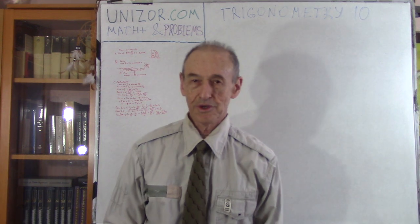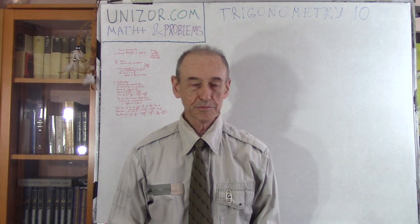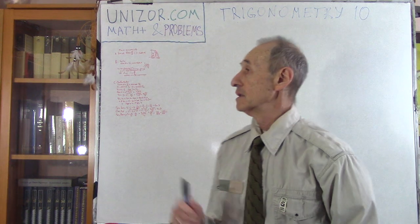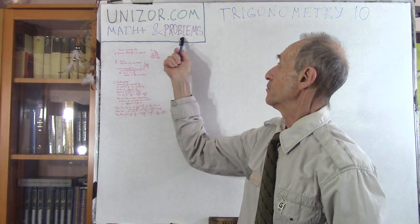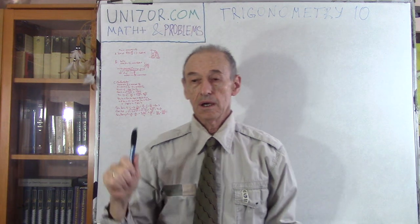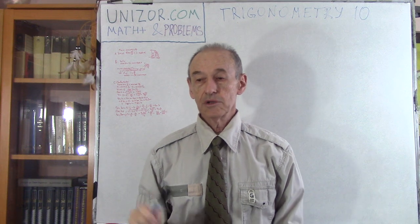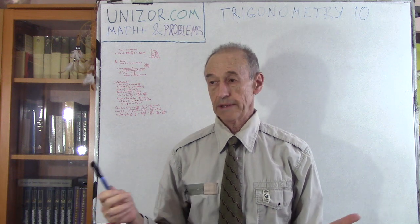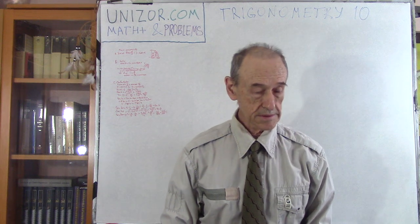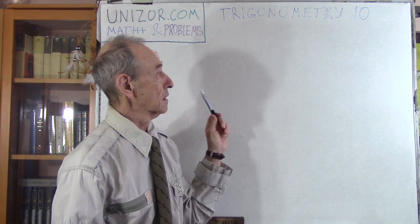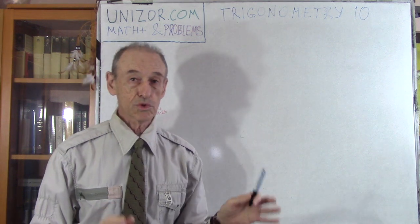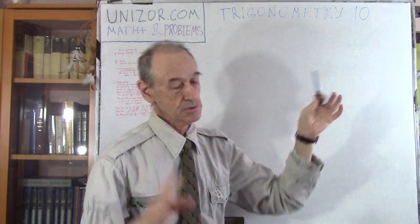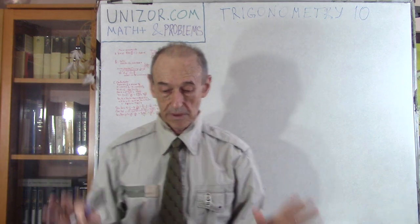Hi, I'm Zor. Welcome to Unizor Education. Today's brain training session involves solving trigonometric problems. This is trigonometry number 10 in the course called Math Plus and Problems presented on unizor.com. Unizor.com is a totally free educational website. You can find the prerequisite course called Math for Teens and some other courses like Physics for Teens, Relativity for All, and some others.